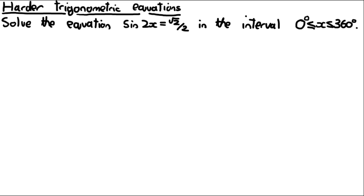This video is on harder trigonometric equations. There's another type of trigonometric equation where a number is inside the trigonometric function, and the approach is slightly different. Here's a question where we need to solve sin(2x) = √2/2, where the 2 is inside the sin next to the x. We cannot divide by 2, as to do this the 2 would need to be outside. The key to answering a question like this is to adjust the interval.